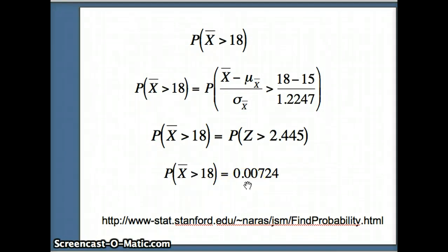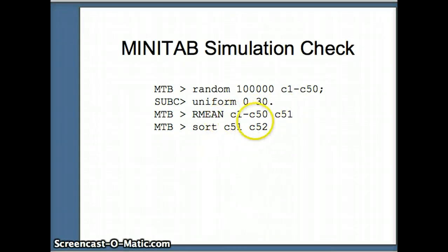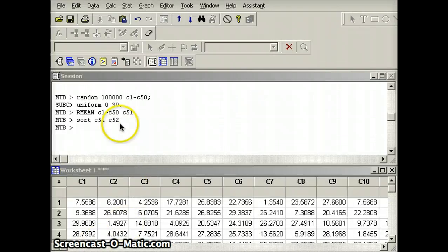Now we'll check this with a Minitab simulation. We generate 100,000 rows in C1 through C50 from a uniform(0,30) distribution, take the row means and put them into C51 — giving us 100,000 averages each computed from 50 numbers — then sort C51 into C52. The syntax is: Random 100000 C1-C50 uniform(0,30); Means C1-C50 into C51; Sort C51 into C52.